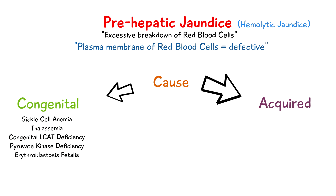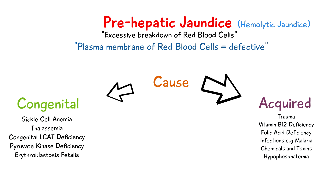Acquired causes of hemolytic jaundice can be trauma, vitamin B12 deficiency, folic acid deficiency, infections like malaria, autoimmune hemolysis, chemicals and toxins, and hypophosphatemia. These are just a few examples of both congenital and acquired forms of hemolytic jaundice, but there are many more which are also causes.